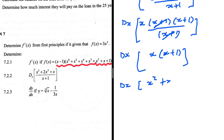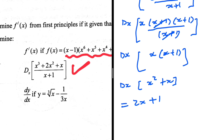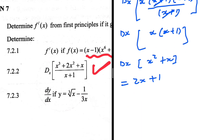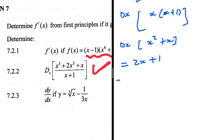Multiplying out x times (x plus 1) gives x squared plus x. Now we can differentiate using the power rule, giving 2x plus 1. Most of the time, the numerator and denominator will cancel to some extent, and that was expected here.